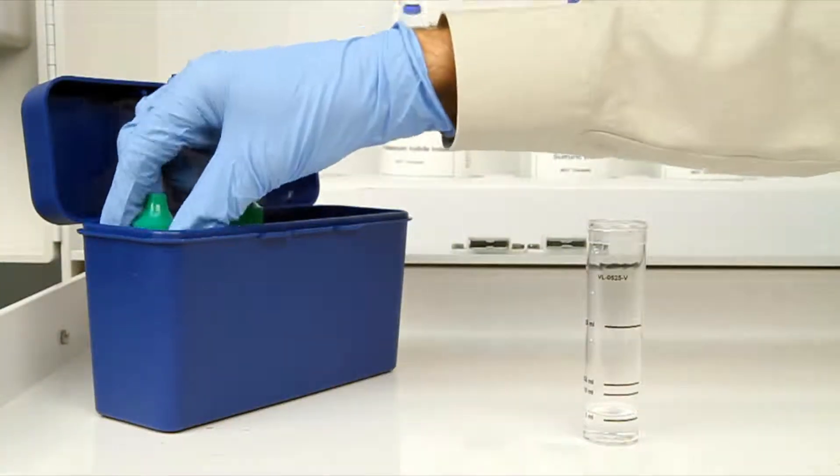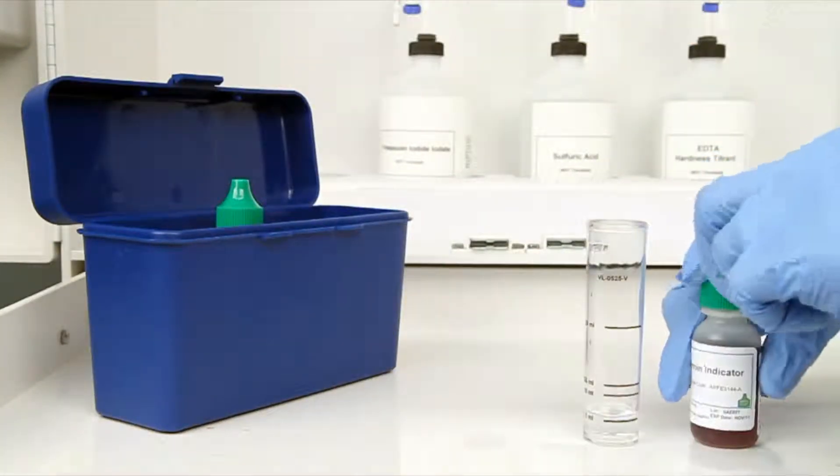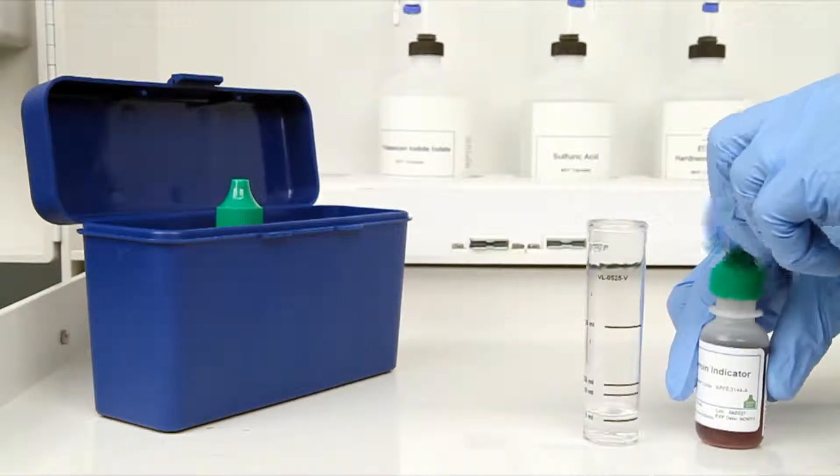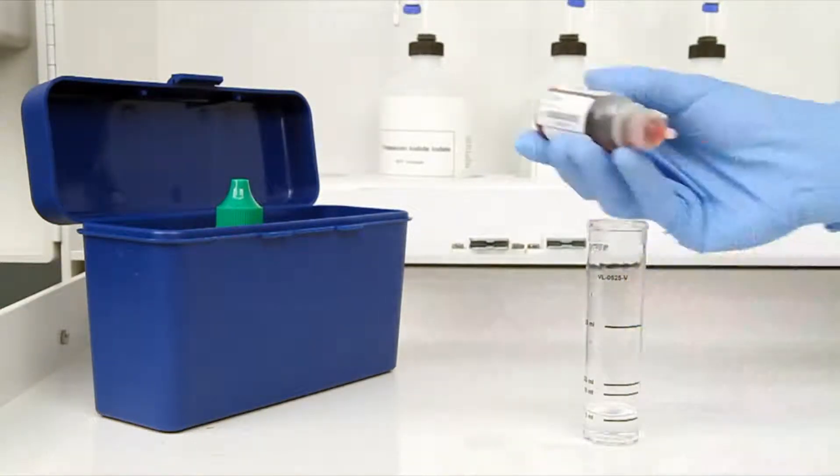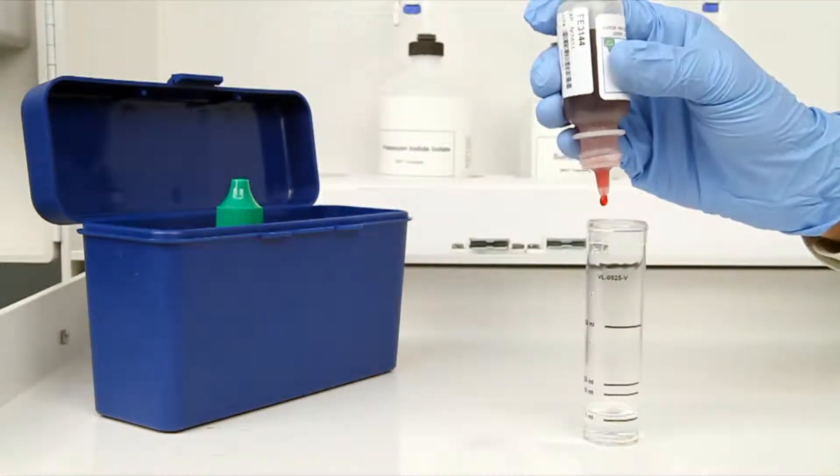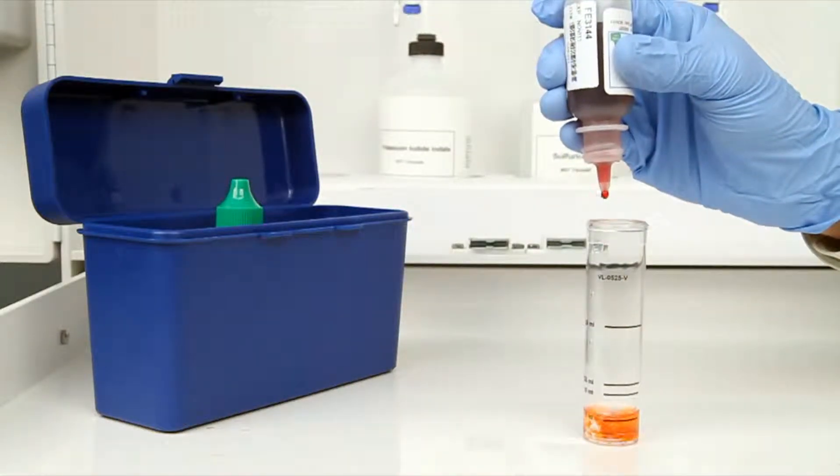The next step according to the endpoint ID procedure is to add eight drops of ferroin indicator. The bottle contains a dropper tip, so it's important to hold the bottle vertically to get a consistent drop size.